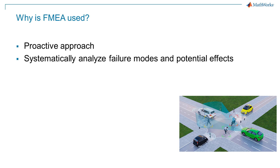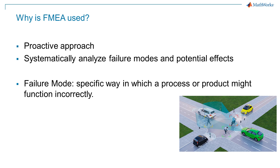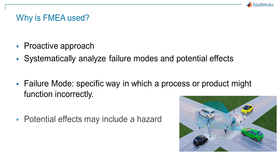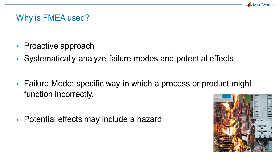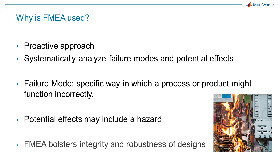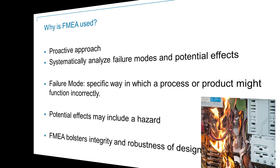A failure mode is a specific way in which a process or product might function incorrectly. A potential effect might be a hazardous condition. FMEA helps ensure that every potential point of failure is accounted for, thereby bolstering the integrity and robustness of designs.